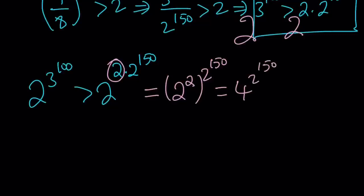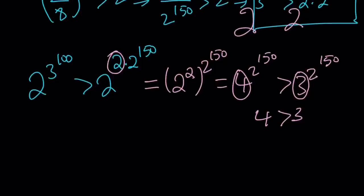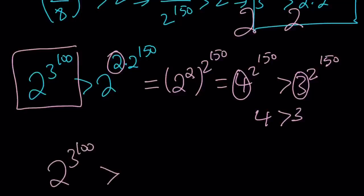And this is greater than 3 to the power 2 to the power 150 because 4 is greater than 3. Look at this. The exponents are the same. The bases are different. And 4 is greater than 3. So this result is true. And guess what that indicates? Here's the conclusion: 2 to the power 3 to the power 100 is greater than 3 to the power 2 to the power 150. And that is going to be the larger number.